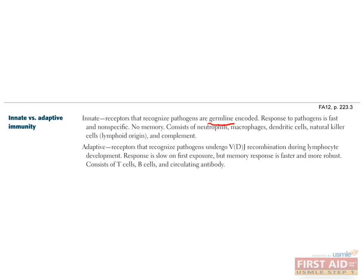Adaptive immunity, on the other hand, develops in response to exposure to pathogens. During lymphocyte development, exposure to antigens facilitates VDJ recombination, which we'll discuss later, which allows for a more specific response. The advantage of adaptive immunity, in spite of its initially slower response, is the fact that memory develops, allowing for faster and more robust immunologic responses to subsequent exposures. The adaptive immune system consists of T cells, B cells, and circulating antibodies.